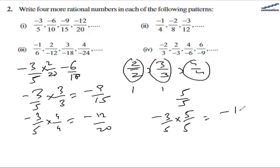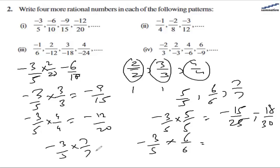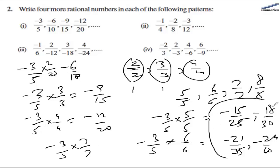The next four numbers in part one are: multiplying by 5/5 gives -15/25, multiplying by 6/6 gives -18/30, multiplying by 7/7 gives -21/35, and multiplying by 8/8 gives -24/40. So these are the 4 consecutive rational numbers for the first part.